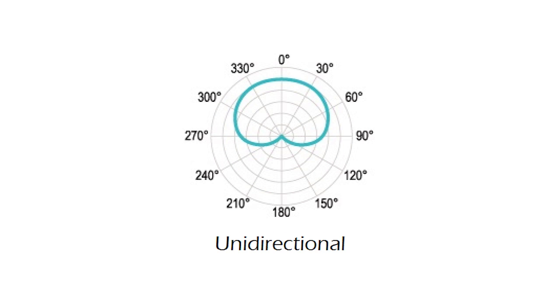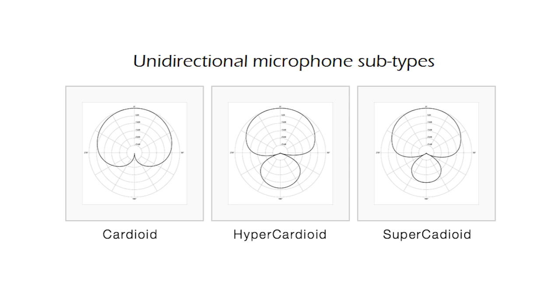A unidirectional microphone mainly perceives sound coming from in front of it, which is why it will perceive sound coming from the sides with less intensity and would practically not perceive sound coming from behind. We can observe this by drawing lines from the center to different directions. There are various types of unidirectional microphones, and this one is especially called cardioid, due to its heart shape.